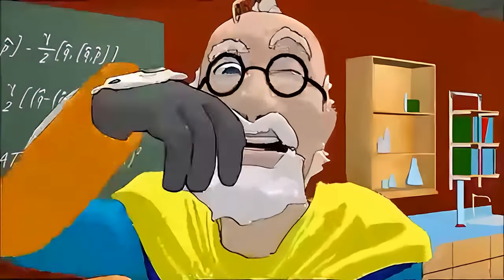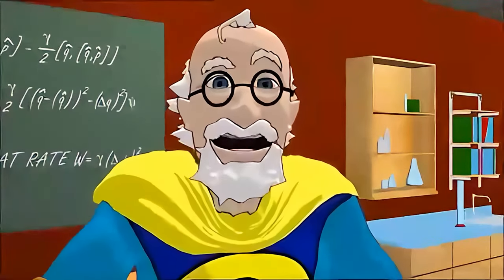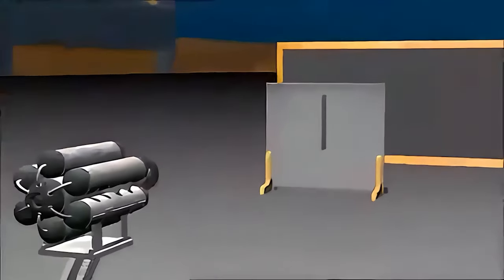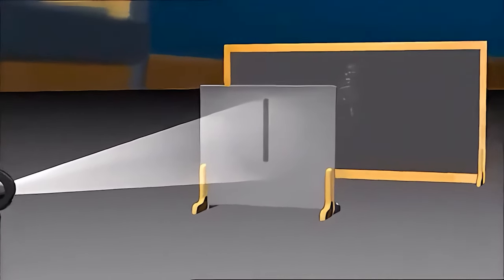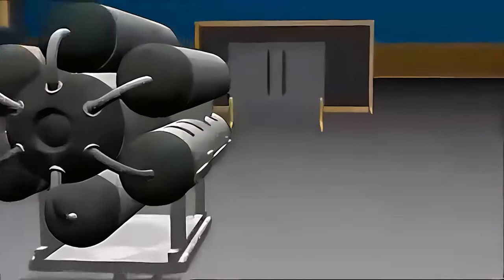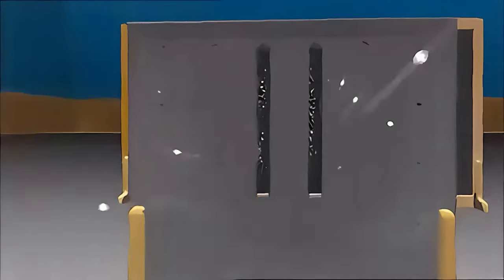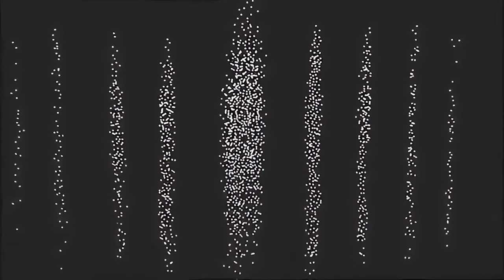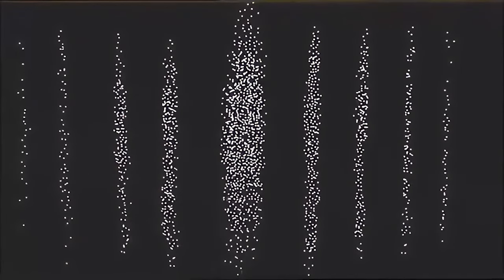Now let's go quantum. An electron is a tiny, tiny bit of matter — like a tiny marble. Let's fire a stream through one slit. It behaves just like the marble: a single band. So if we shoot these tiny bits through two slits, we should get, like the marbles, two bands. But we get an interference pattern. We fired electrons — tiny bits of matter — through, but we get a pattern like waves, not like little marbles. How could pieces of matter create an interference pattern like a wave? It doesn't make sense.